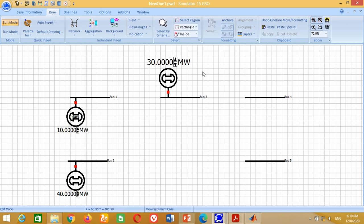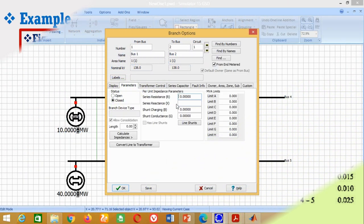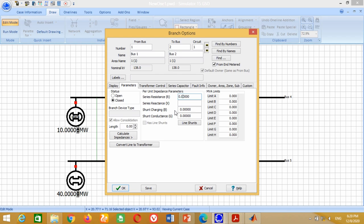Now we need to connect the transmission lines. Go to Draw, click on Transmission Line and connect it from Bus 1 to Bus 2. From the example data, the transmission line from Bus 1 to Bus 2 has resistance 0.02, reactance 0.06, and capacitive susceptance 0.03. Therefore, write 0.02 here, 0.06 here, and 0.03 here.